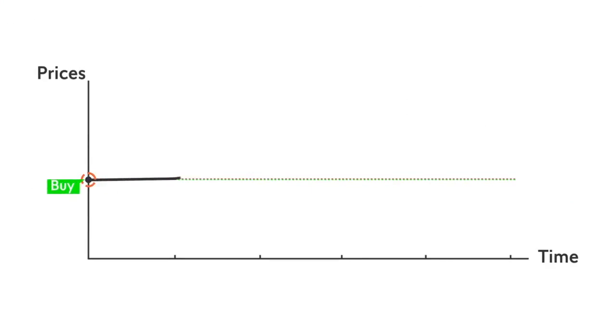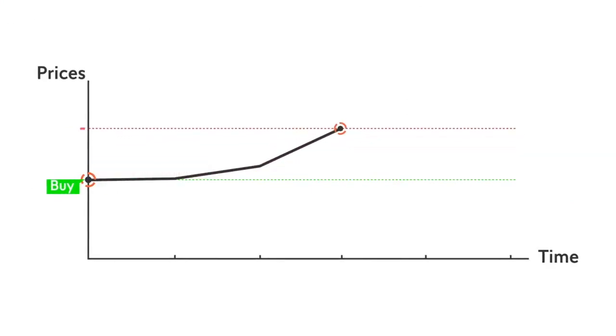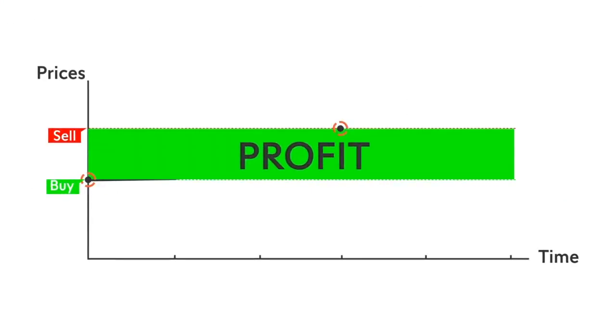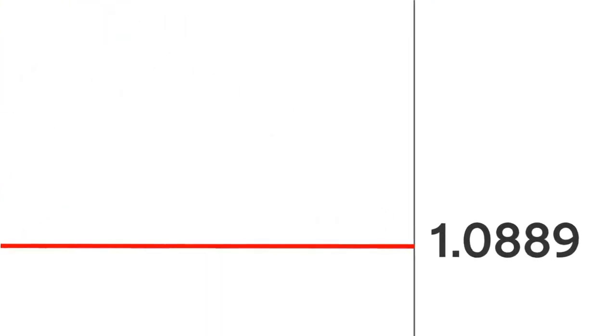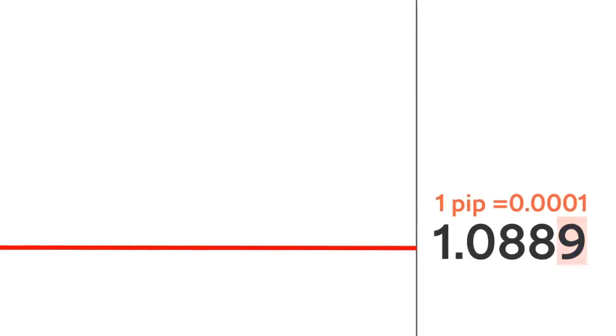In trading, profit is made by buying low and selling high, and that happens in Forex too. The difference between the buy price and the sell price is called the spread. The spread is measured not in whole dollars or pounds but in so-called pips. This is the smallest possible price change on most trading platforms. For most currency pairs, this is the fourth number after the decimal point.